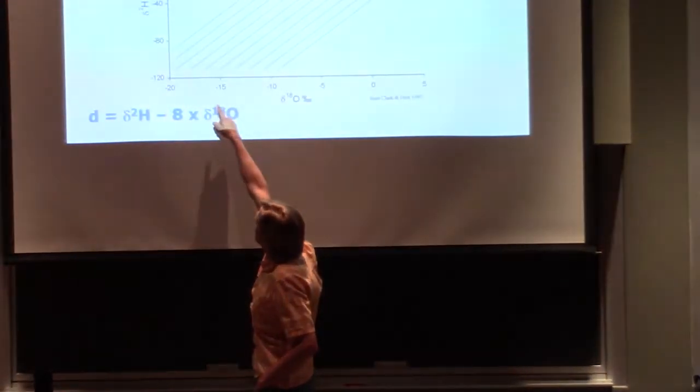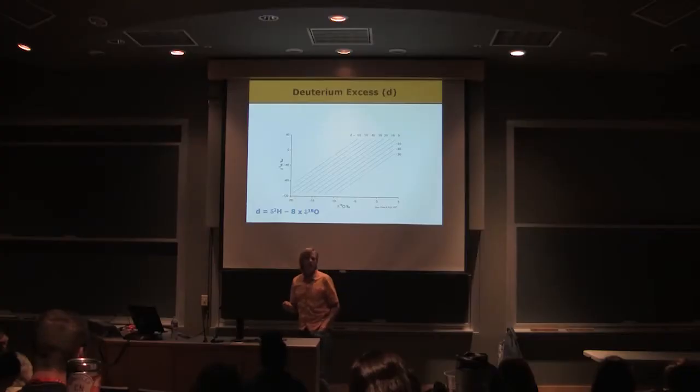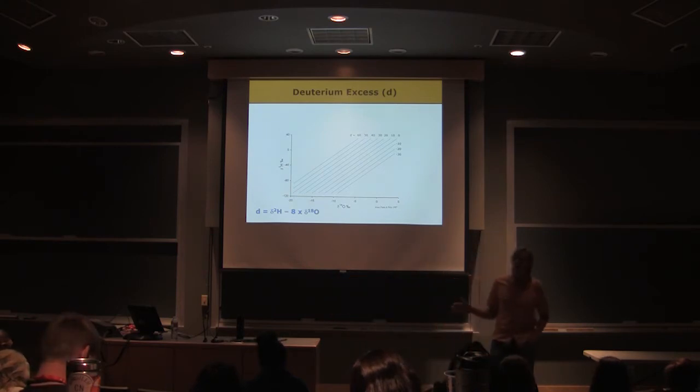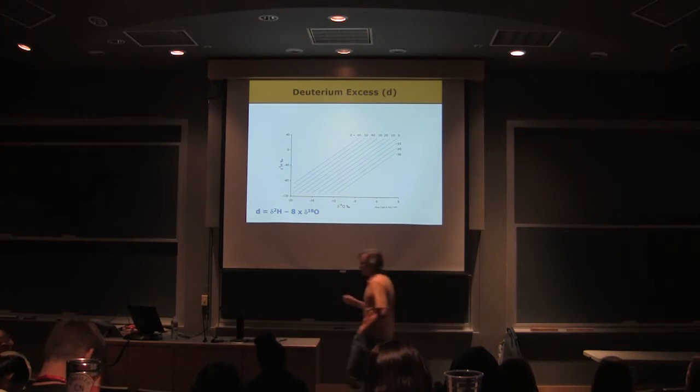We could be down here at really low delta-18-O values or way up there at really high delta-18-O values. We could have had a lot of Raleigh distillation affecting our sample relative to some other sample. But if we calculate deuterium excess, if there's no kinetic effect that moves us off one of these iso lines, moves us away from that slope 8 relationship, then we'll get the same deuterium excess value. And so that's where this becomes useful.